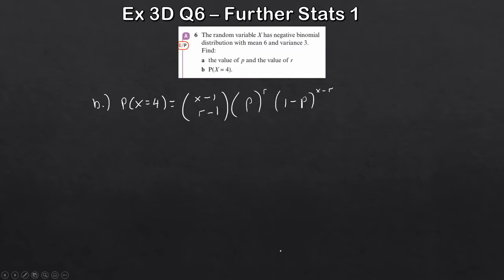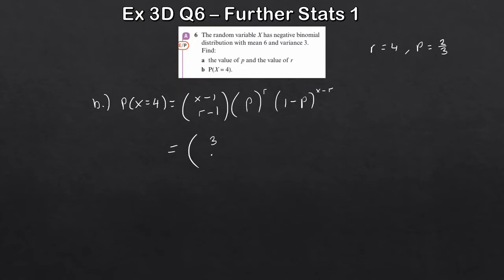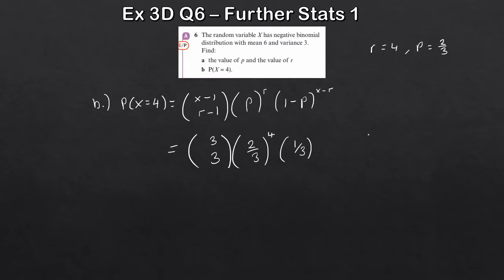Substituting x = 4, r = 4, p = 2/3: we get (3 choose 3) times (2/3)⁴ times (1/3)⁰. Since 3 choose 3 equals 1 and (1/3)⁰ equals 1, we're left with just (2/3)⁴.